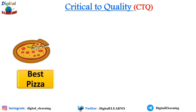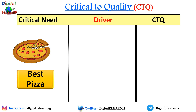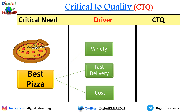To make things easier, let us first construct the CTQ tree. We list the critical need, which is 'the best pizza.' Then we identify the drivers and CTQs. The first driver would be variety, the second would be fast delivery, and the third would be cost.